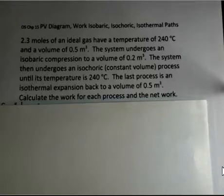Then the system will have a constant volume, isochoric or some call it isovolumetric, increase in pressure, but volume is constant until the temperature is 240 degrees Celsius. So we're back to the original temperature, but the volume is less and the pressure is greater. The last process is going to be from the small volume, an isothermal expansion back to the larger volume of 0.5 cubic meters. So isothermal, the temperature will be constant on this third path.